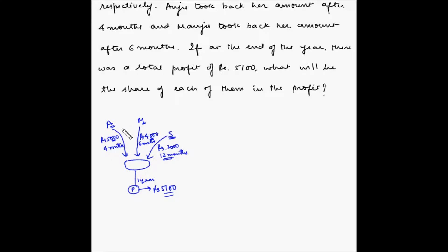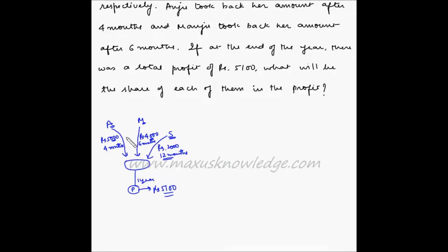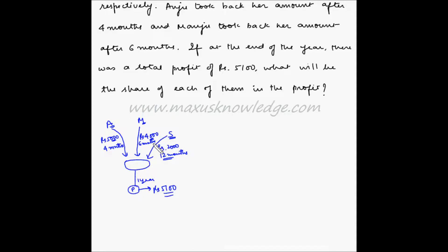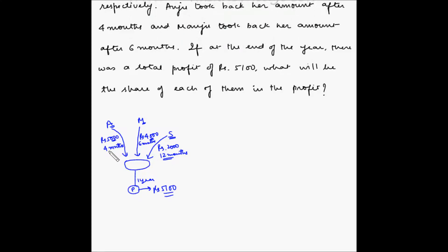All three then understood the problem and agreed that the profit should be distributed considering both the amount of money invested by each investor and the duration for which it was invested. The contribution is calculated as the amount invested multiplied by the duration. For Anju, she invested rupees 5,000 for four months, so her contribution is 5,000 × 4 = 20,000.